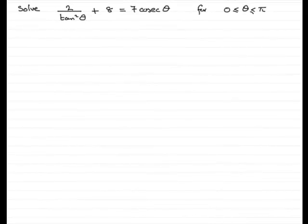Hi, welcome to this example on solving trig equations. In this example, we're asked to solve 2 divided by tan squared theta plus 8 equals 7 cosec theta. We've got to solve it for theta, which is in radians, and it's between 0 and pi radians inclusive.